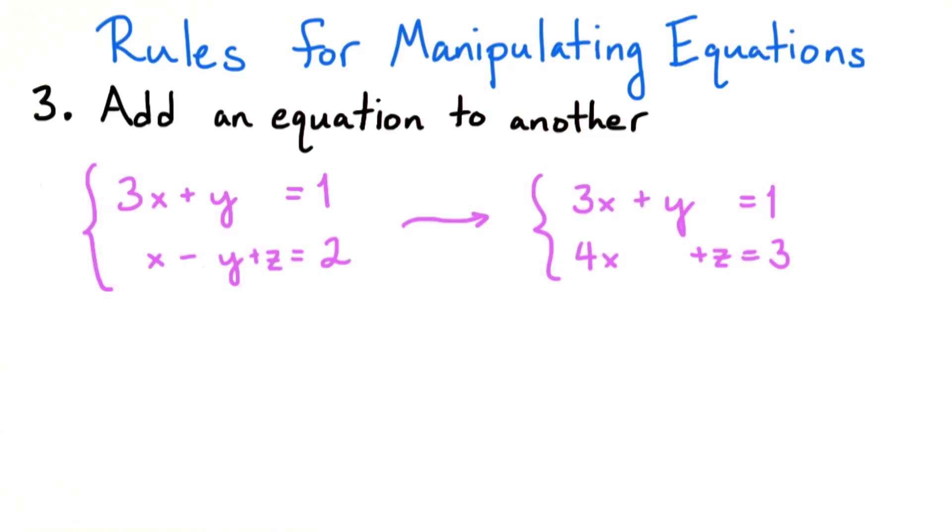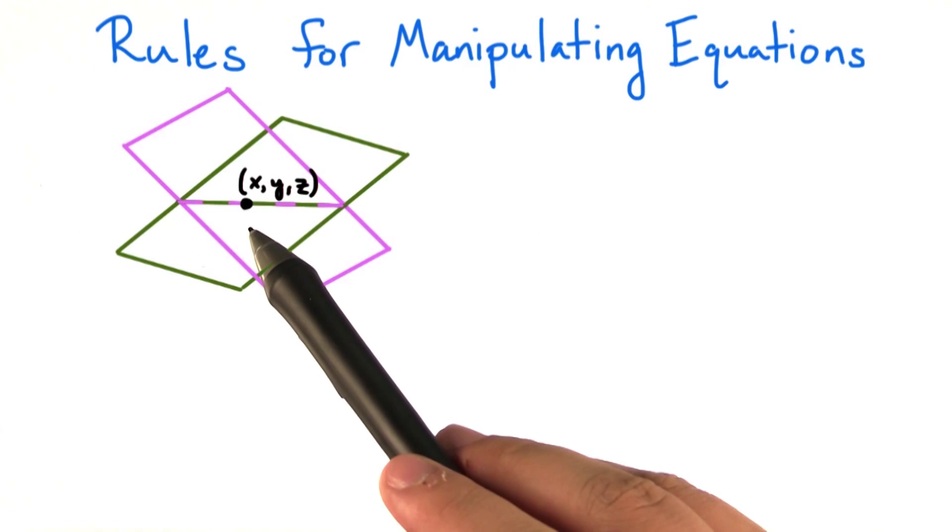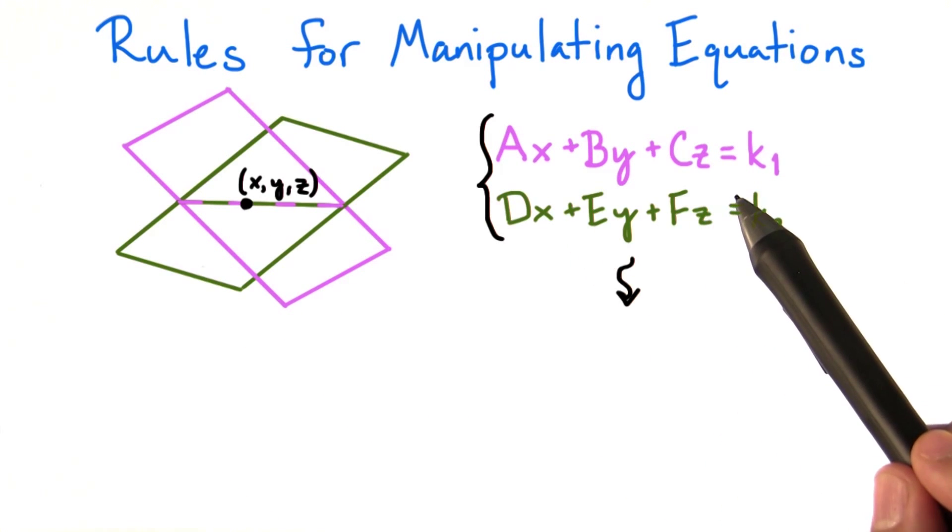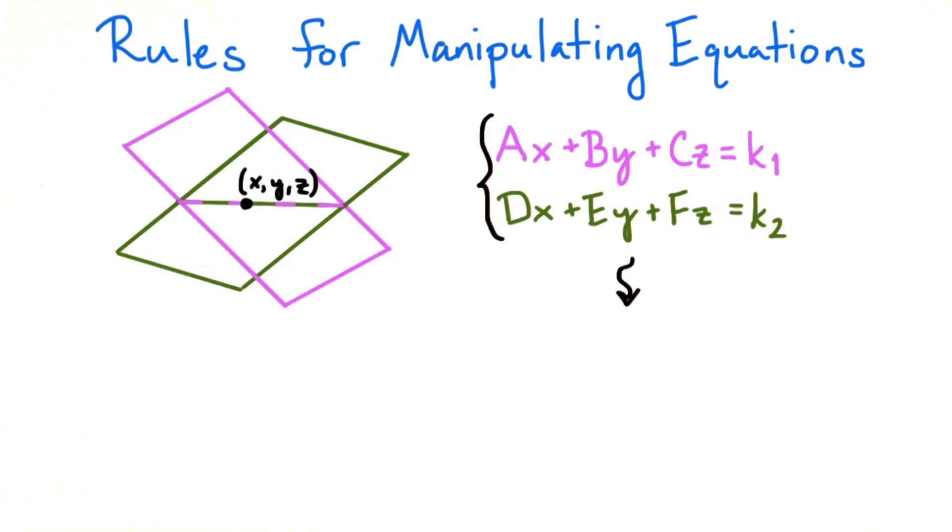Third, if we have two equations, we can add one equation to the other. Does this operation preserve the solution set? Well, suppose we had a point x, y, z that was in the intersection of two planes. In other words, the point x, y, z satisfies both of these equations.